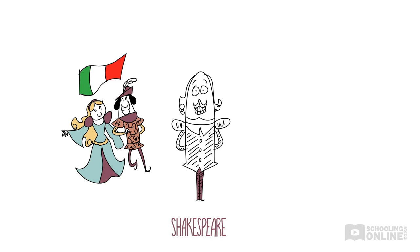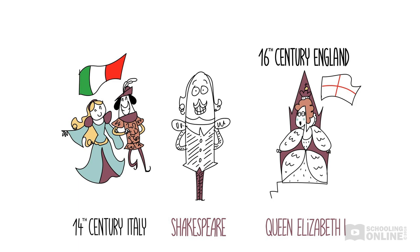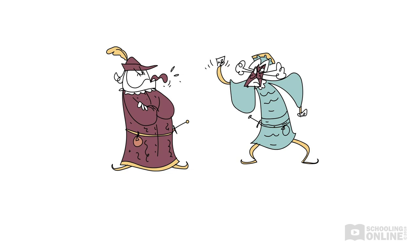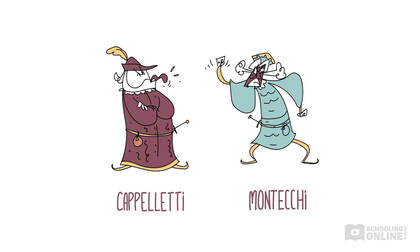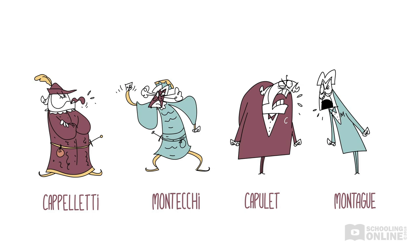Now let's examine the political context. Shakespeare sets his play in 14th century Italy, which was similar in lots of ways to his time in 16th century England when Queen Elizabeth I ruled. Both times had experienced a lot of violence and political uncertainty. For example, in Italy there was a famous rivalry between the Capuletti and Montecchi families — if you think these names sound a lot like Capulet and Montague, you'd be right. This conflict inspired older versions of Romeo and Juliet that appeared in Italian literature.